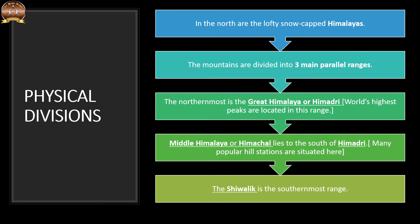The northernmost is the Great Himalaya or Himadri, where the world's highest peaks are located. The Middle Himalaya or Himachal lies to the south of Himadri, and many popular hill stations are located here. The southernmost range is the Shivalik.